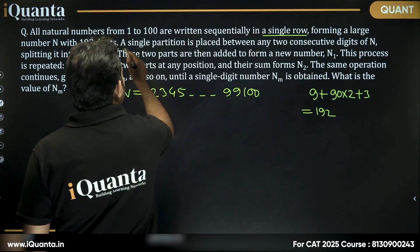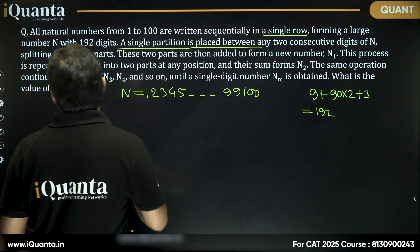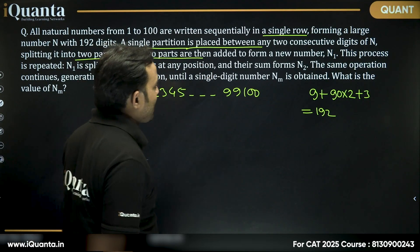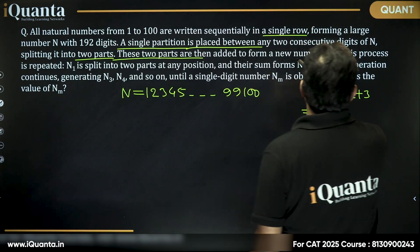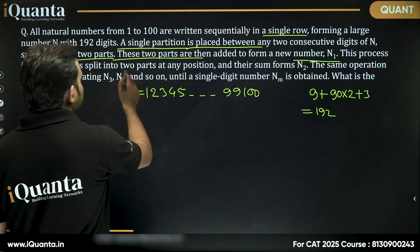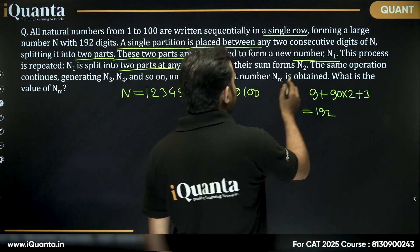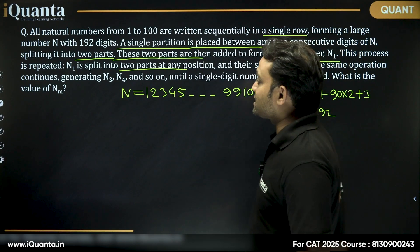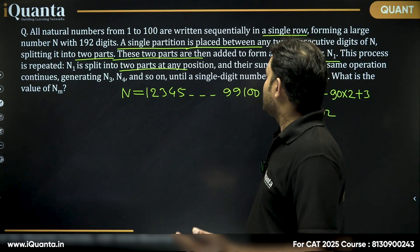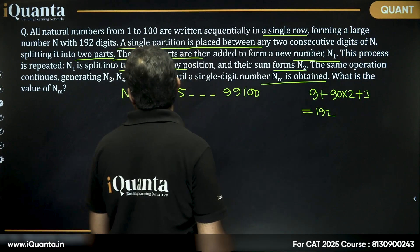A single partition is placed between any two consecutive digits of n, splitting it into two parts. These two parts are then added to form a new number n1. This process is repeated. n1 is split into two parts at any position, and their sum forms n2. The same operation continues generating n3, n4, and so on, until a single digit number nm is obtained. What is the value of nm?